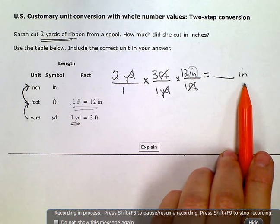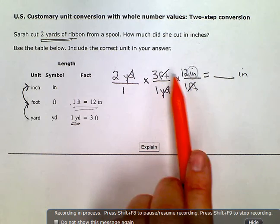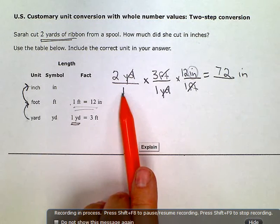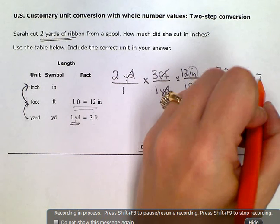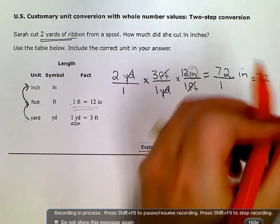So now I can go ahead and just multiply straight across the top and the bottom. So 2 times 3 is 6. 6 times 12 is 72. And then in the denominator, I have 1 times 1 times 1, which is just 1. So my final answer is 72 inches.